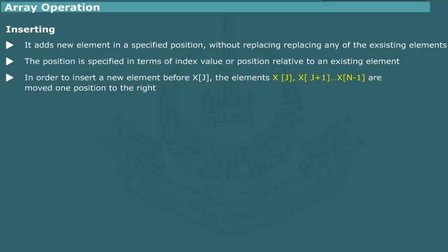For example, if a new element is to be inserted, it is placed before an element xj, then x[j], x[j+1], up to x[n-1], n being the array size, are moved one position to the right.